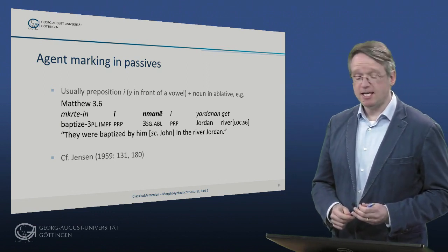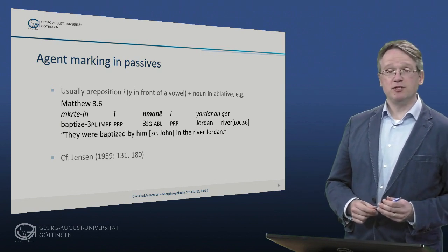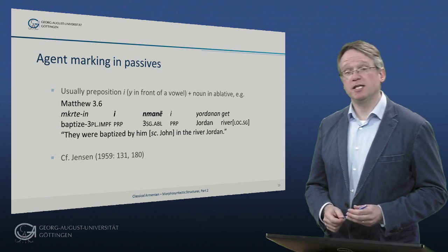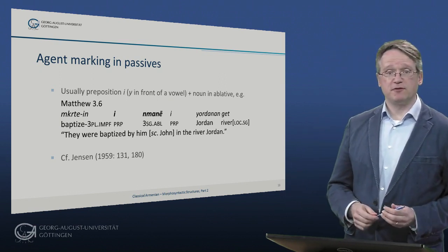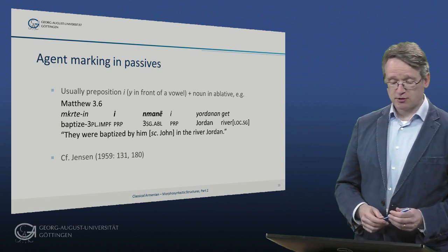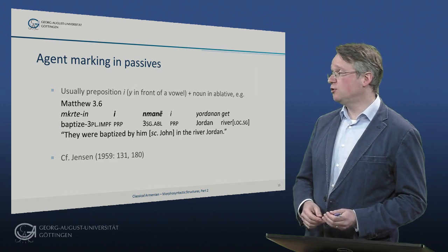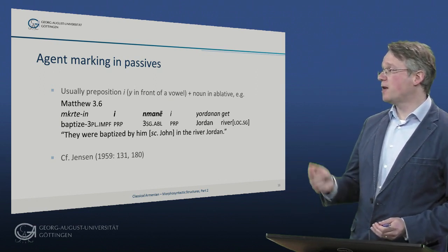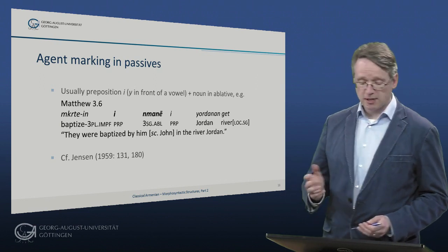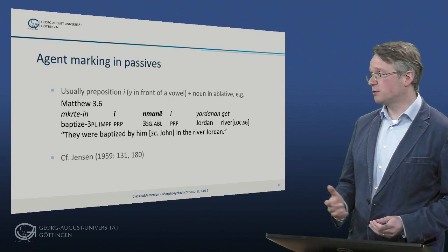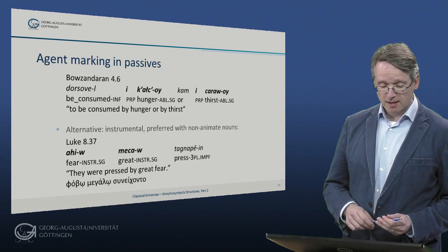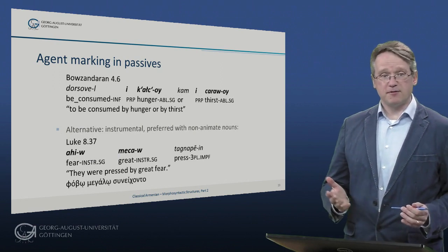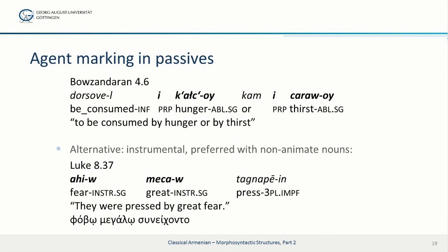Let's have a look now at agent marking in passives. Usually, the most common way to mark the agent in a passive construction is by the preposition i or yod in front of a vowel, and the governed noun in the ablative case. So, here's an example from the Bible: 'they were baptized by him', that is, John the Baptist in the river Jordan, and we have i nmanē, that is, the ablative of the personal pronoun.